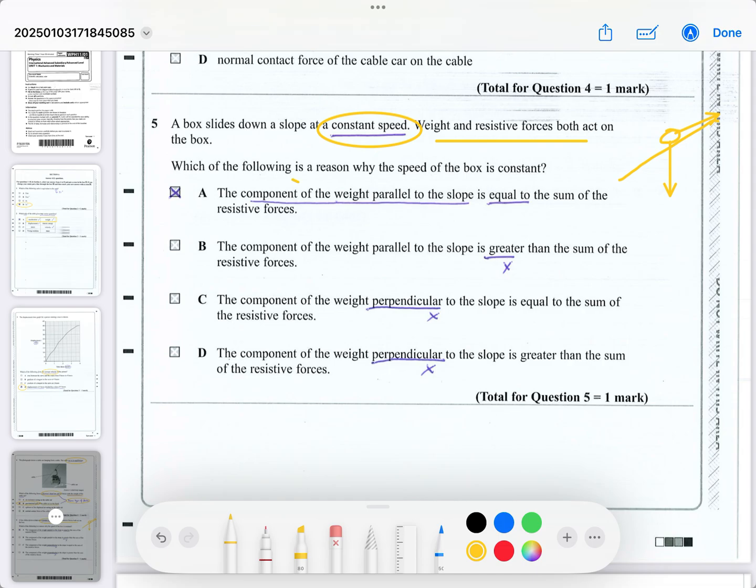And A is the answer. It's the component of the weight parallel to the slope, which is equal to the resistive force, which is up the slope. Because obviously, if you know the angle over here, that angle will allow you to resolve the component of the weight down the slope, which is parallel to the slope. So the answer is A. And you can see why I've crossed out B, C, and D. Because here it says, is greater than. Well, if it's greater than, there won't be a constant speed because there will be imbalance of forces. And the components of the weight perpendicular to the slope will be the reaction force. And this is a reaction force. Whereas the reason it's moving at constant speed is because the components of the weight pulling it down the slope is equal to the resistive forces which are stopping it from accelerating.